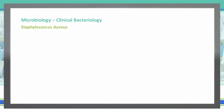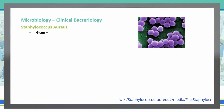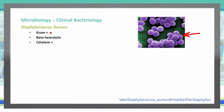Let's talk about Staph aureus — probably one of the most well-known bacteria. Everybody has heard about MRSA, but there are other important things to know. First and foremost, Staph aureus is gram positive, giving us those purple colonies under a gram stain. It is also beta hemolytic, so it causes the blood agar plate to turn clear or white. It is catalase positive, coagulase positive, and appears in clusters.